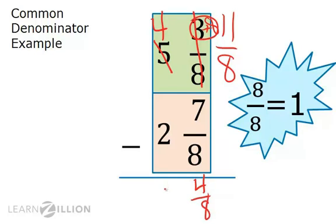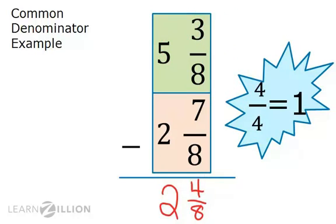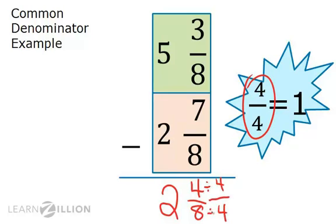Now we can use this 11 eighths, subtract 7 eighths, and get 4 eighths. 4 minus 2 is 2 in the ones place. Now we will simplify using the greatest common factor. We divide by 4 over 4 because it is the greatest common factor of the numerator and the denominator. We are left with 2 and 1 half as our answer.